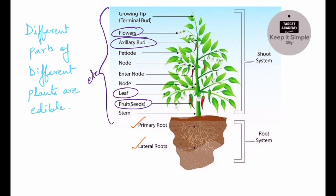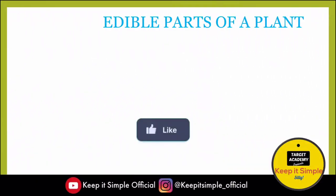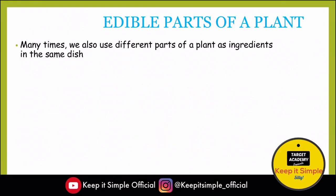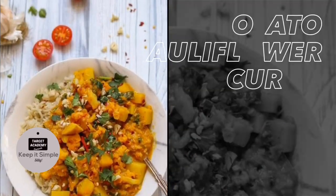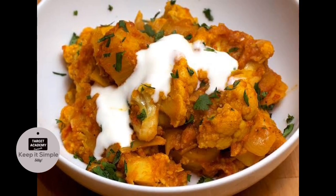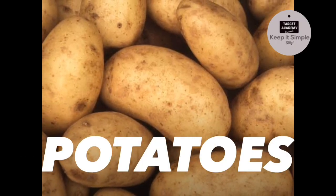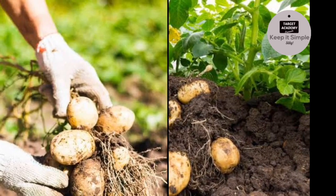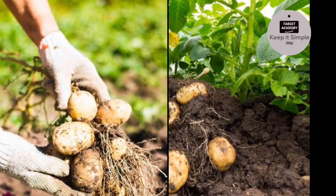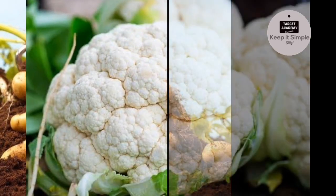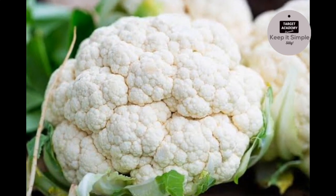Sometimes in one dish we use different parts of plants. For example, the book uses brinjal curry, but let's take another example — potato cauliflower curry, or alu gobi, which is more common. Here's an interesting thing: potato is actually a stem. So the source of potato is plants, and it is actually a stem — amazing, right? Cauliflower is the flower of the plant; for us it is categorized as a vegetable, but botanically cauliflower is a flower.